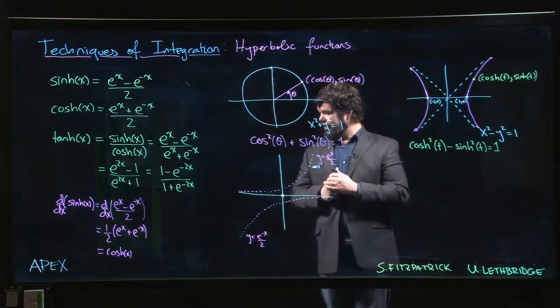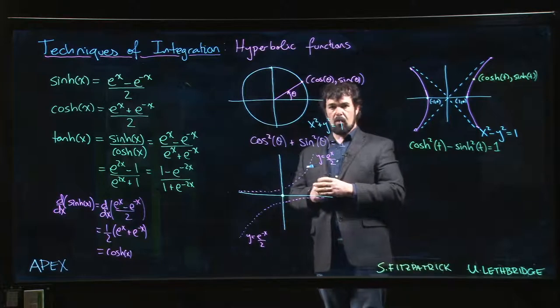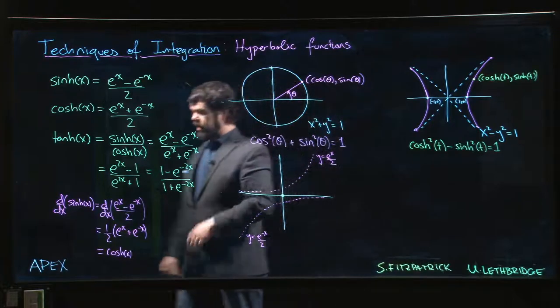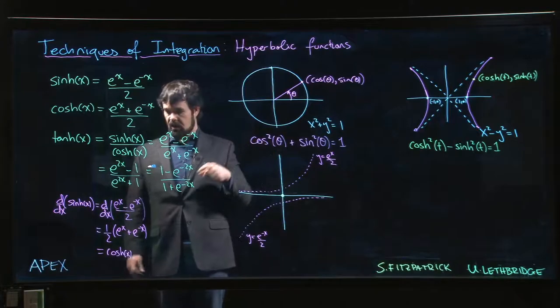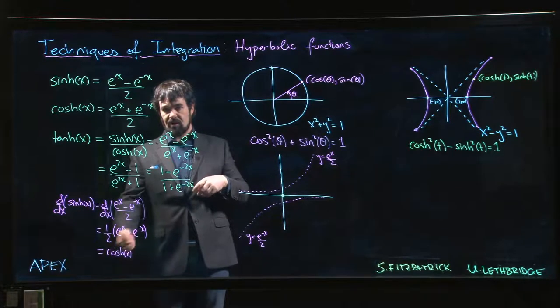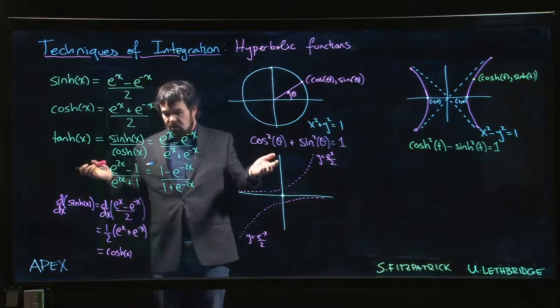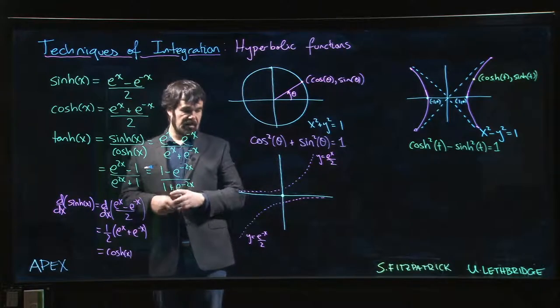So the derivative of sine is cosine whether you're talking about trig functions or hyperbolic functions. This is true in either case. And if you go back to chapter two when you look at the work that we had to do to prove that the derivative of sine is cosine, this is a heck of a lot easier. So hyperbolic functions have at least that going for them.